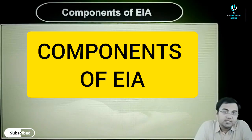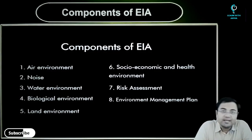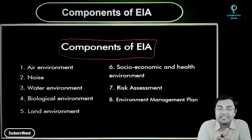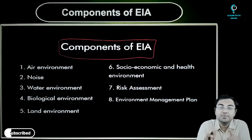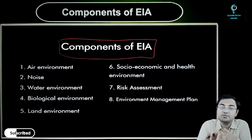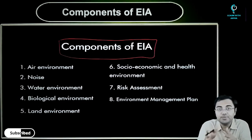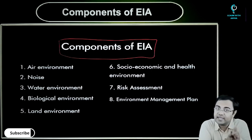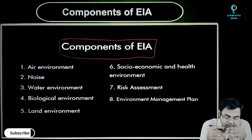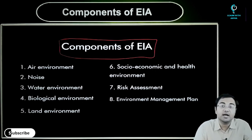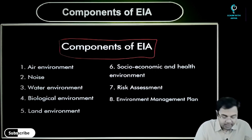Now that we have understood the process, the next thing we need to understand are all the components of EIA. When we talk about components of EIA, the screening and scoping that is being done is based on a set of parameters. We saw a list of questionnaires that the European Union has, on the basis of which they do all the research. So when it comes to these components, you need to understand what they are and how these things are being decided.